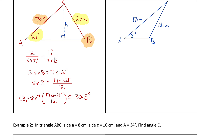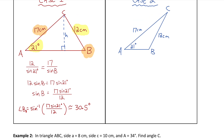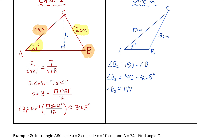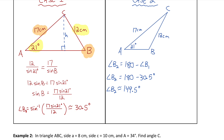The second possible answer for angle B comes from case two, where the relationship between the two angle B possibilities is that they're supplementary — they add to 180. So the second possibility for angle B is 180 minus 30.5 degrees, which is about 149.5 degrees. Both of these are valid possibilities for what angle B could be based on the given information — it's ambiguous as to which of the two it is, so we state them both.